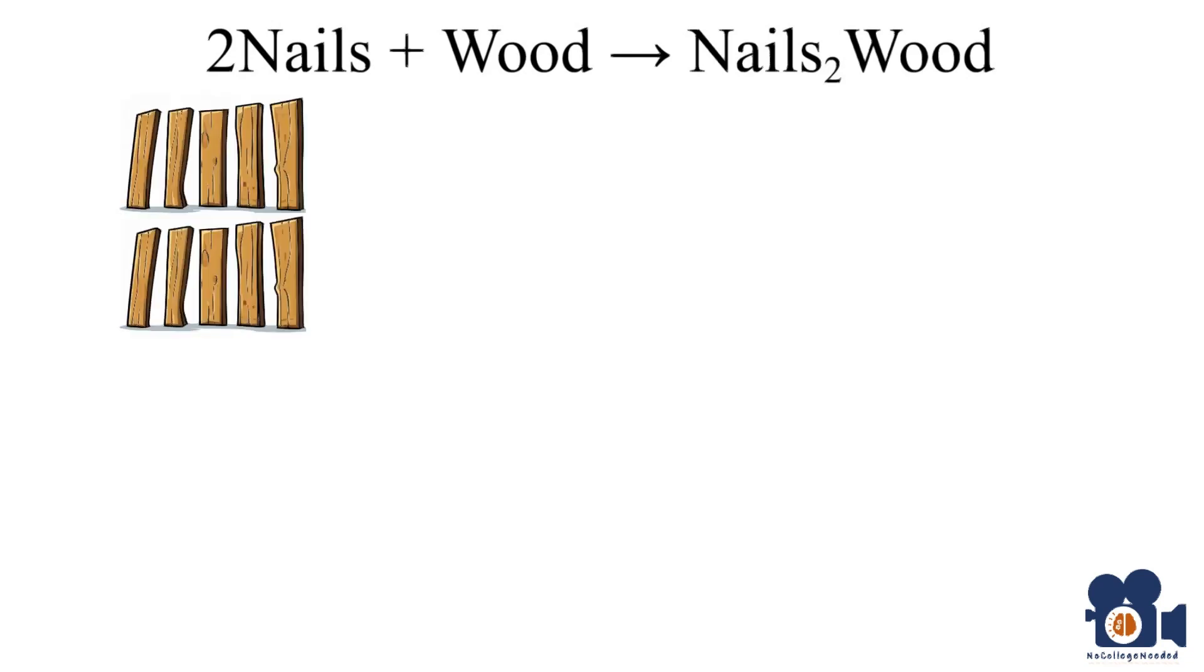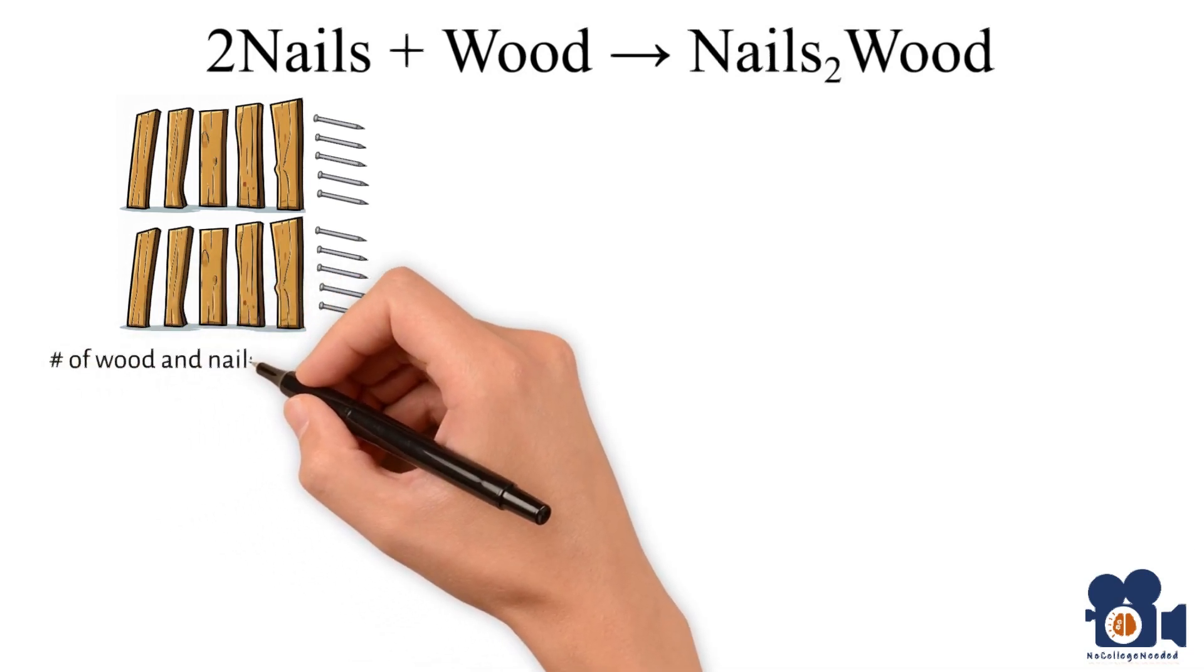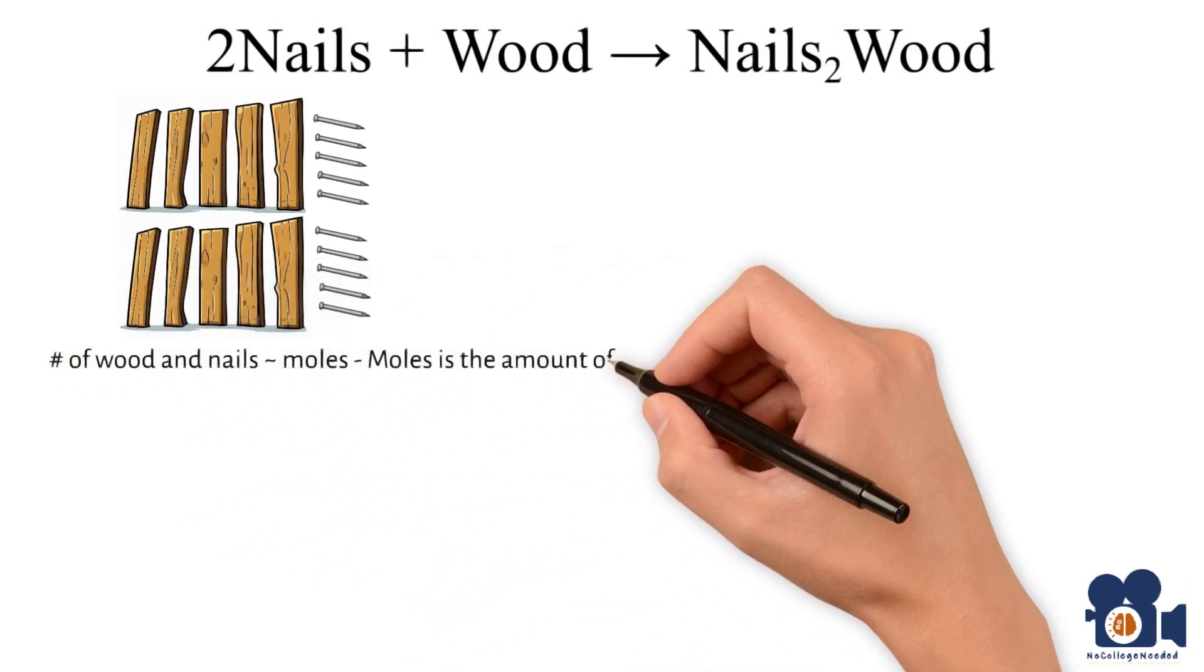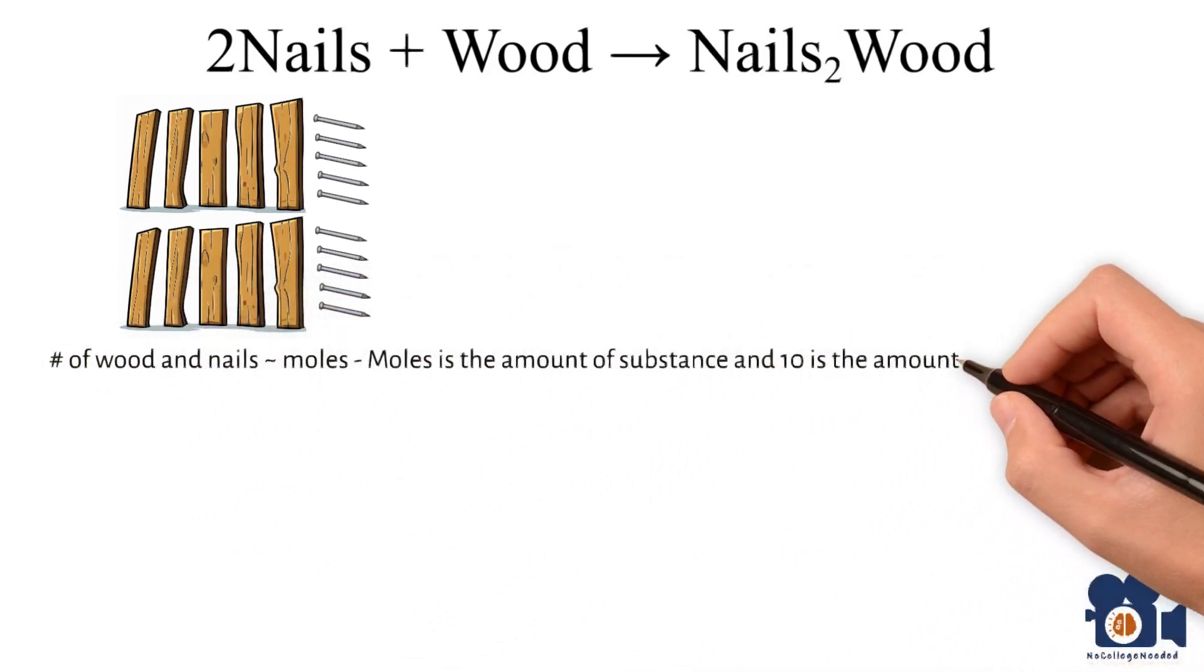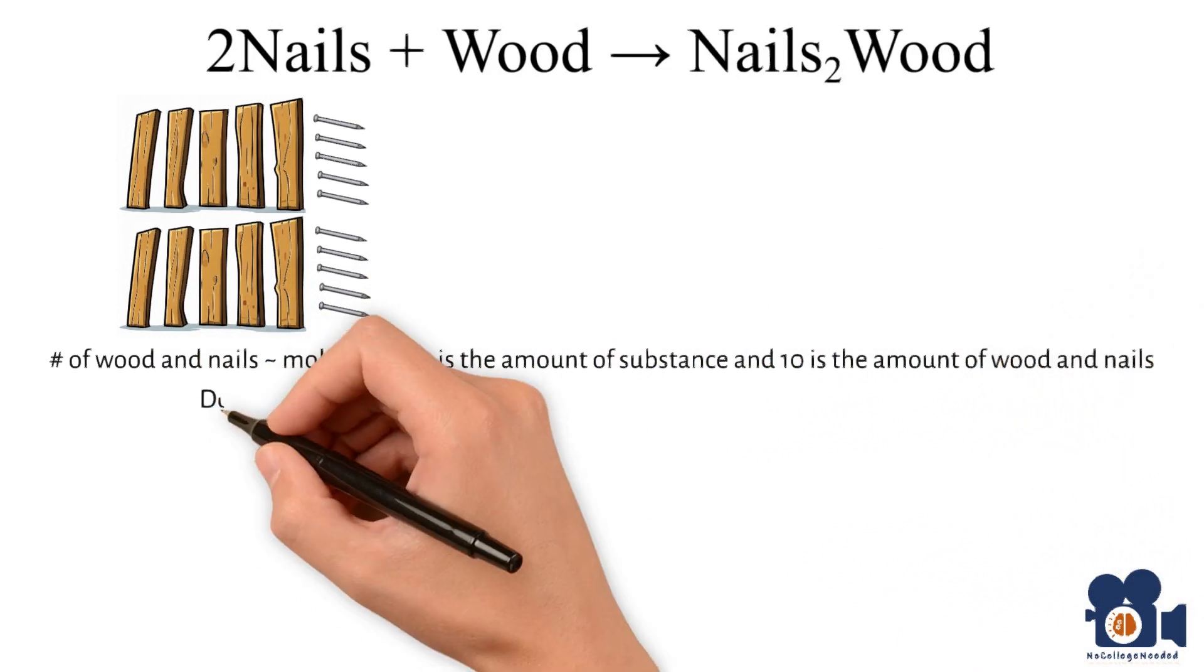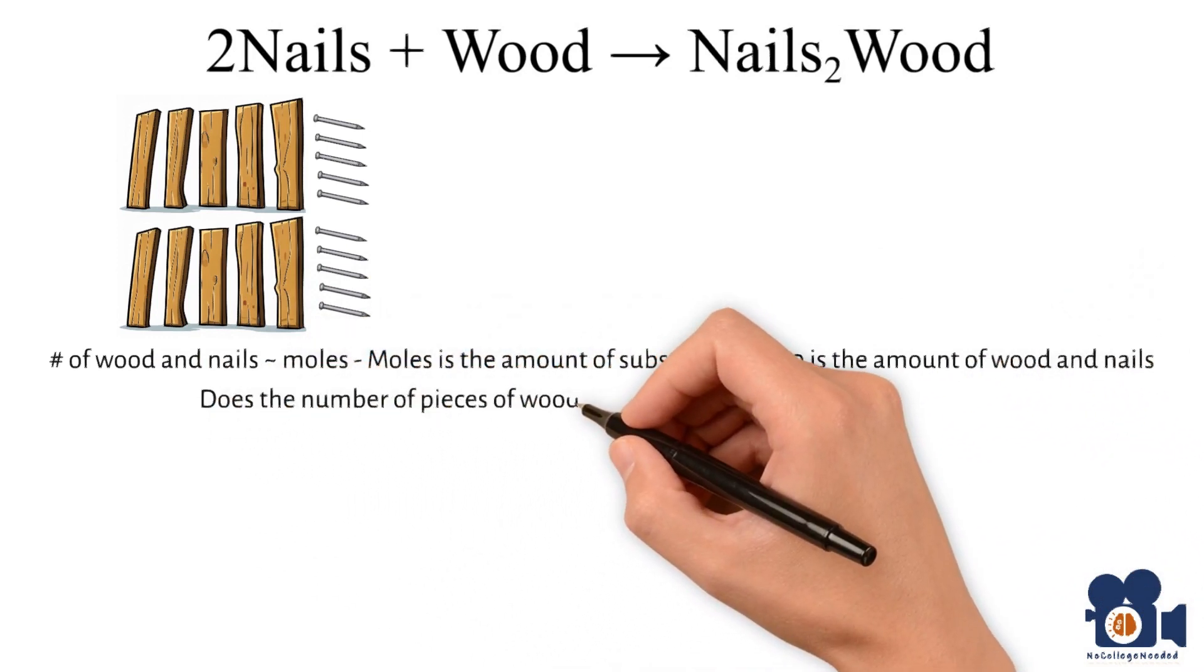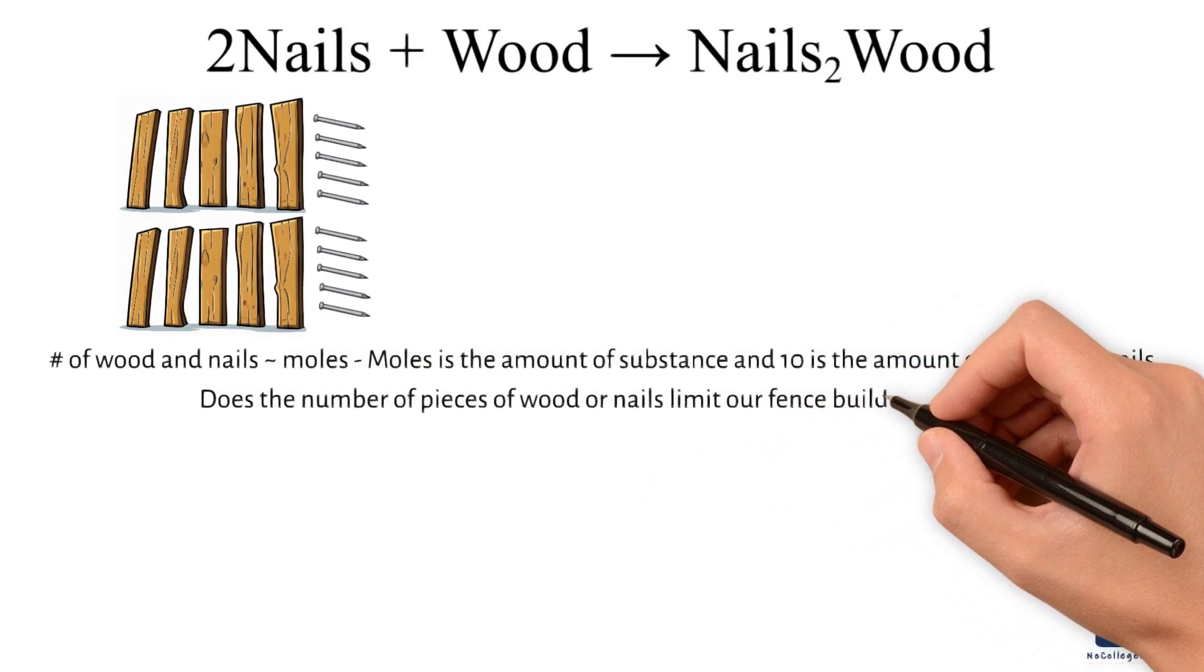It depends on the amount of nails and wood that we have. Let's say we have ten pieces of wood and ten nails. Remember, we can liken these numbers to moles because moles is the amount of a substance and ten is the amount of wood and nails.